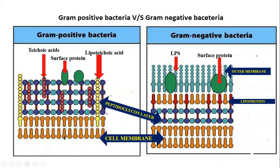The gram negative outer membrane contains outer membrane proteins and lipopolysaccharides (LPS), which constitute the endotoxin of gram negative bacteria. The LPS also determines the major surface antigen, that is the O antigen. This is a major difference between gram positive and gram negative bacteria.